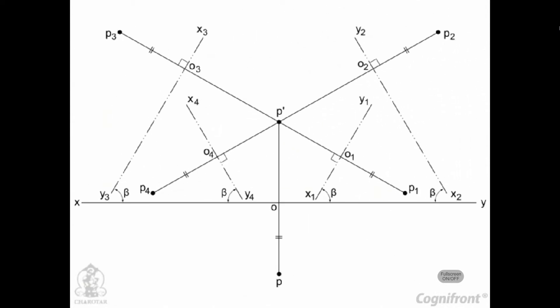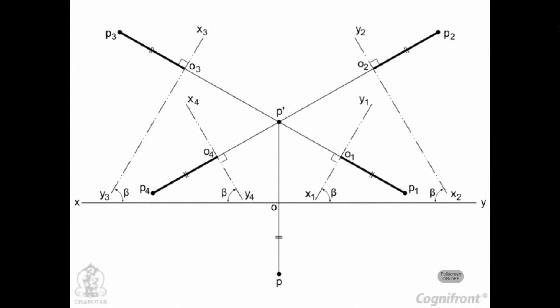In this case also, the new reference line can be drawn in four different positions, as shown in the figure, by lines X1, Y1; X2, Y2; etc., each inclined at beta to XY. All the top views are projected from the front view P dash and their distances from their respective reference lines are equal — that is, P1 O1 equals P2 O2, and so on, equals PO.